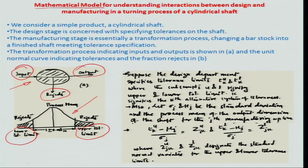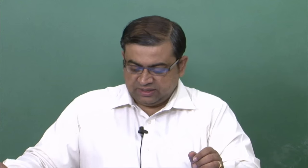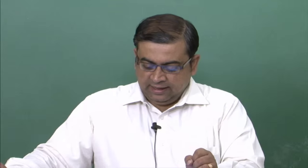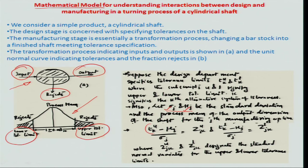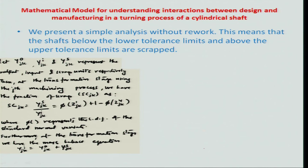We computed from the distribution the process mean and the process standard deviation. These are mostly given by manufacturers in the technical specifications related to the machinery they are selling. From those values and the design requirements, we tried to calculate the z-variate. From the z-variate on the upper and lower side, we tried to determine what the material balance equation gives us — specifically, the scrap fraction.